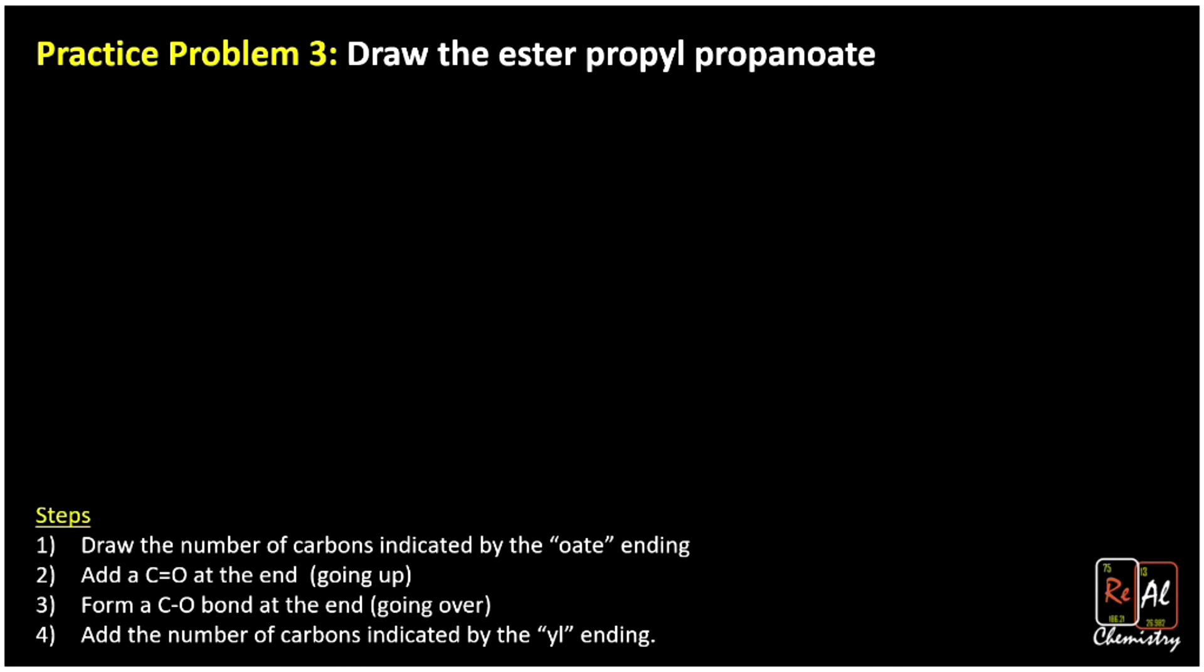So it says, if we follow these steps step by step, it says draw the number of carbons indicated by the oate ending. Well, the oate ending is right up here, and the oate ending tells us that we want to have the C=O bond have three carbons. So we're just going to draw our three carbons. One, two, three.